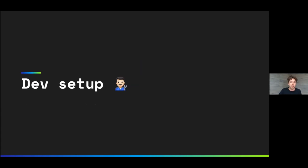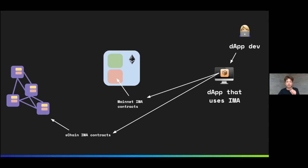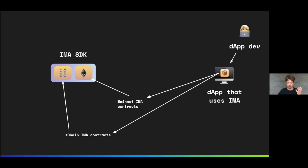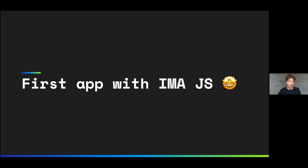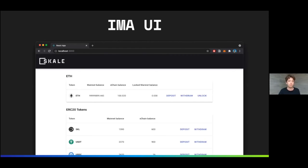For the dev setup, the S-chain and mainnet parts could be easily replaced with the IMA SDK dev tool that we discussed earlier. And we already have the first app that uses IMA in the works — it's called IMA UI, a static website used to easily transfer tokens between S-chain and mainnet.